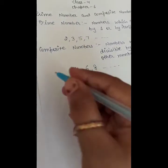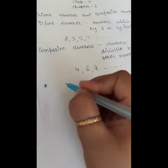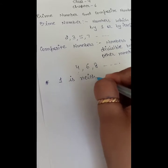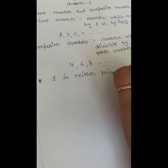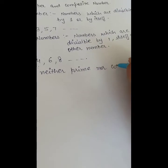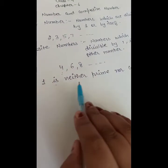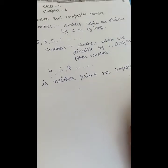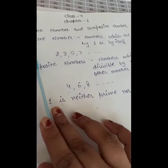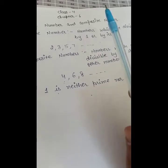One has only one factor, which means one is neither prime nor composite. In terms of factors, you can explain prime numbers as numbers which have only two factors. Prime numbers are those which have only two factors.